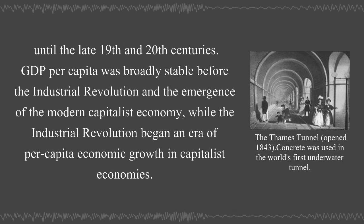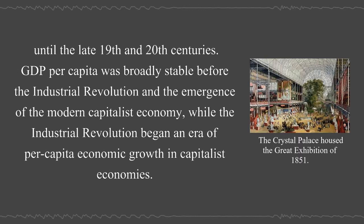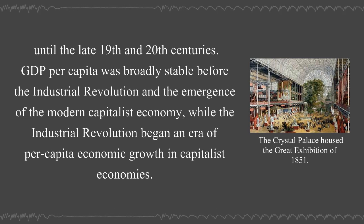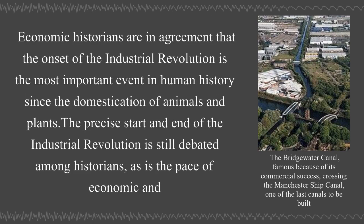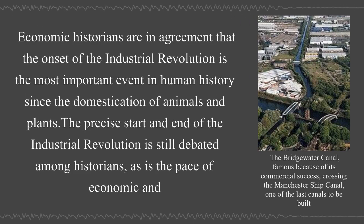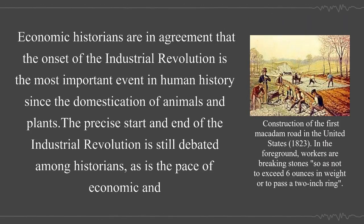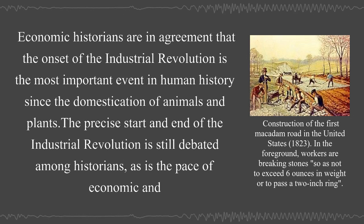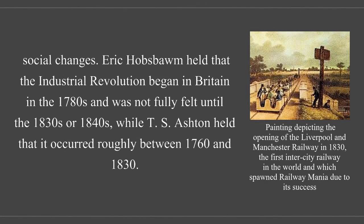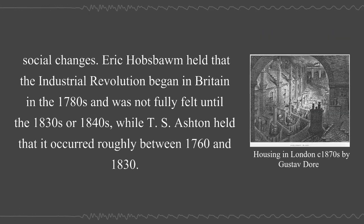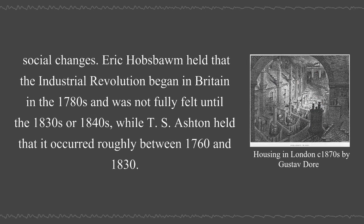GDP per capita was broadly stable before the Industrial Revolution and the emergence of the modern capitalist economy, while the Industrial Revolution began an era of per capita economic growth in capitalist economies. Economic historians are in agreement that the onset of the Industrial Revolution is the most important event in human history since the domestication of animals and plants. The precise start and end is still debated; Eric Hobsbawm held it began in the 1780s and was not fully felt until the 1830s or 1840s, while Leigh S. Ashton held it occurred roughly between 1760 and 1830.